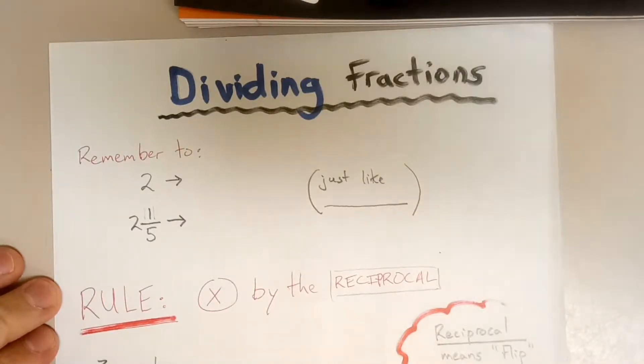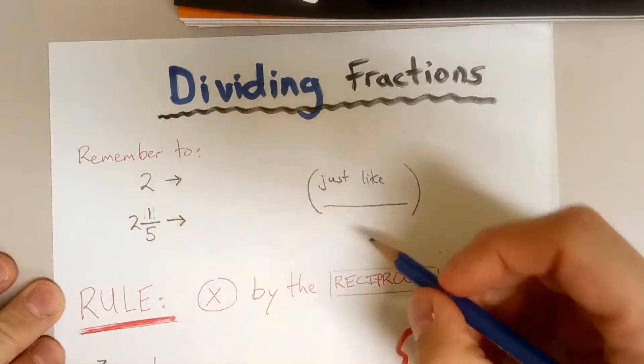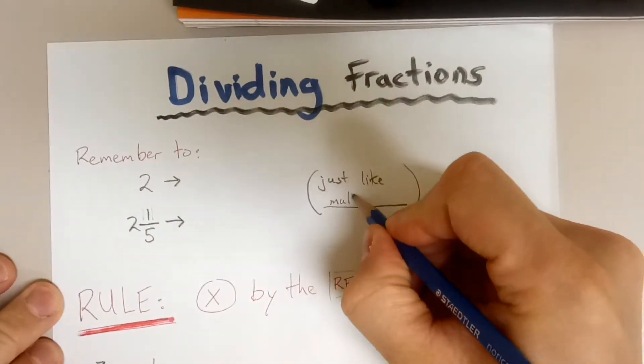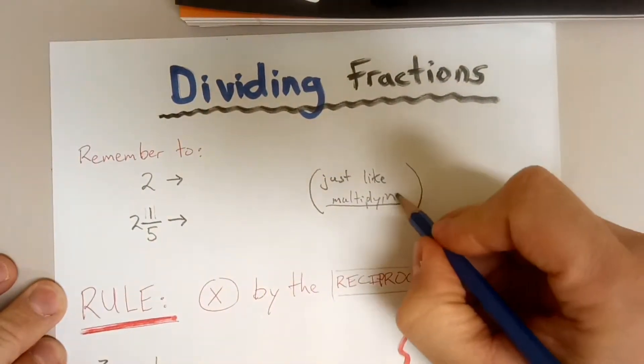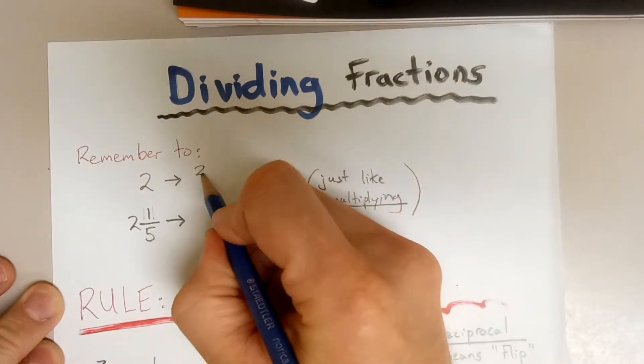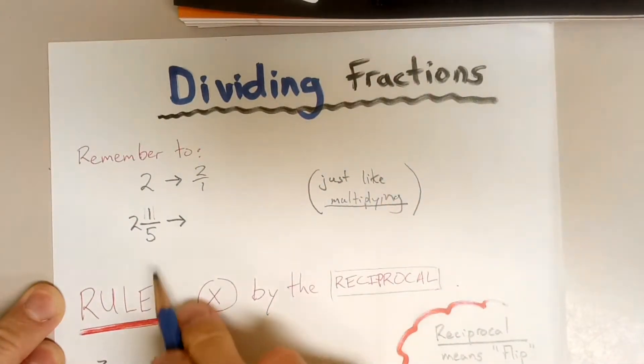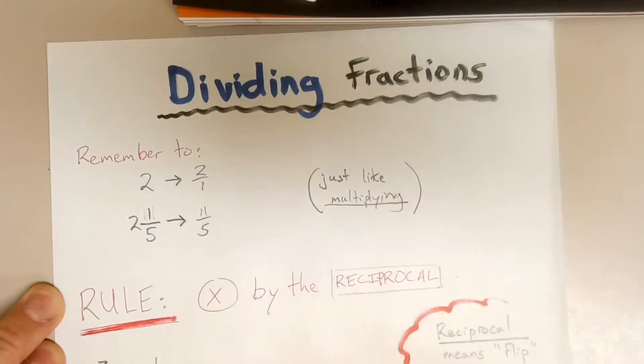Hi, we're looking at dividing fractions. First we're going to start with a reminder. Just like when you're multiplying fractions, if you have a whole number you want to write it as 2 over 1, and if you have a mixed number you want to write it as an improper fraction.